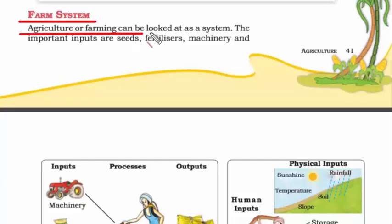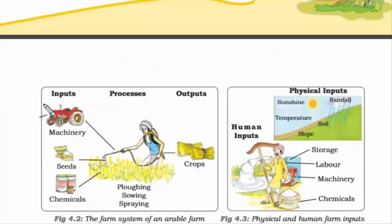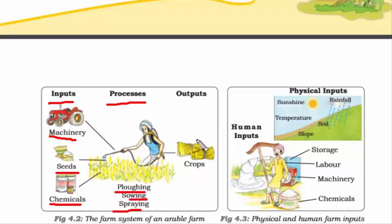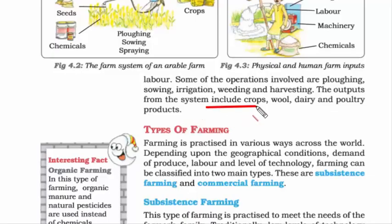Agriculture or farming is like a system, meaning it has inputs, outputs, processes, and a cycle. For farming, inputs include seeds, fertilizers, machinery, and labor. Looking at this picture, you can see the inputs required: chemicals, seeds, and machinery. The process refers to what we do with the inputs — plowing, sowing, and spraying. And finally, the output is what we gain from the entire investment: crops. From agriculture we get crops; from animals we get wool and dairy; and from poultry we get products from hens and chickens.